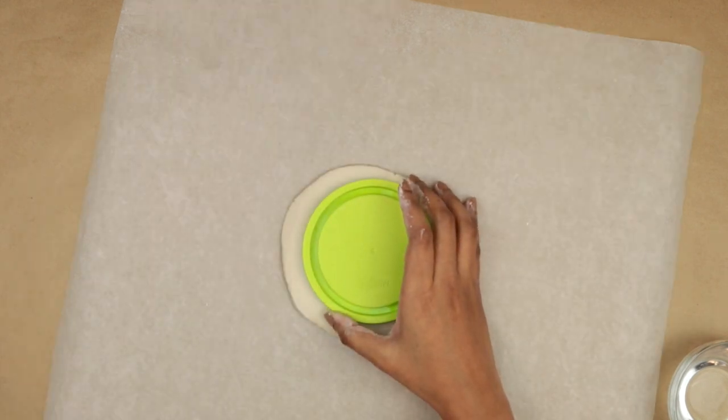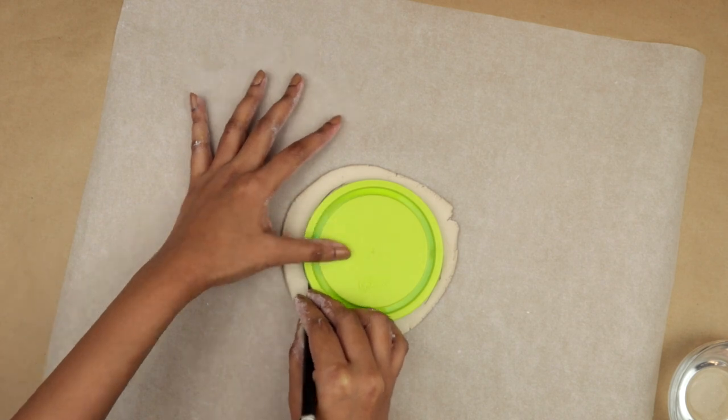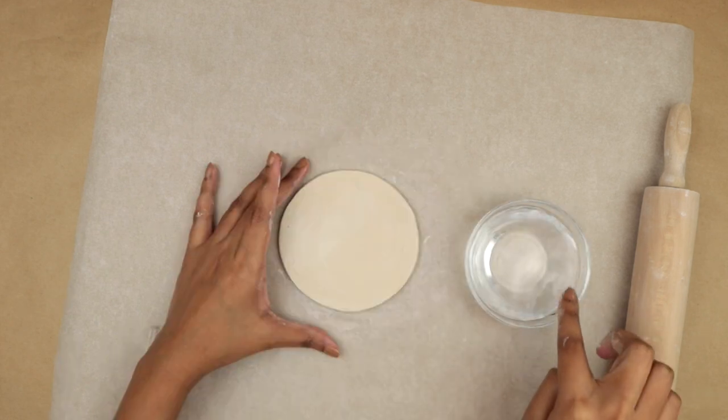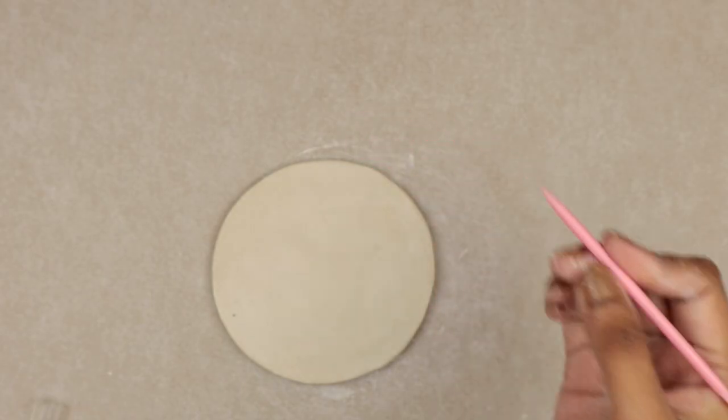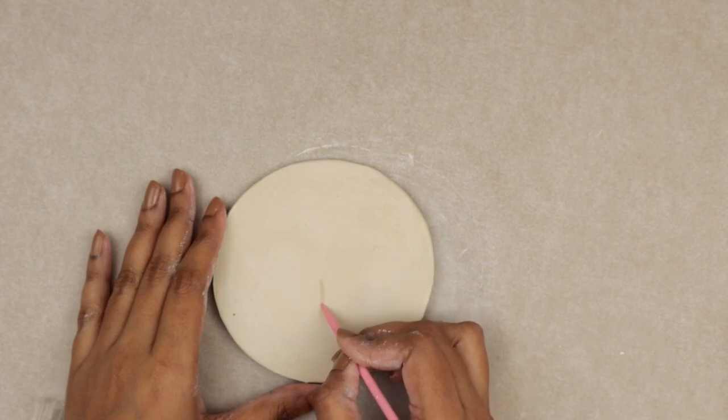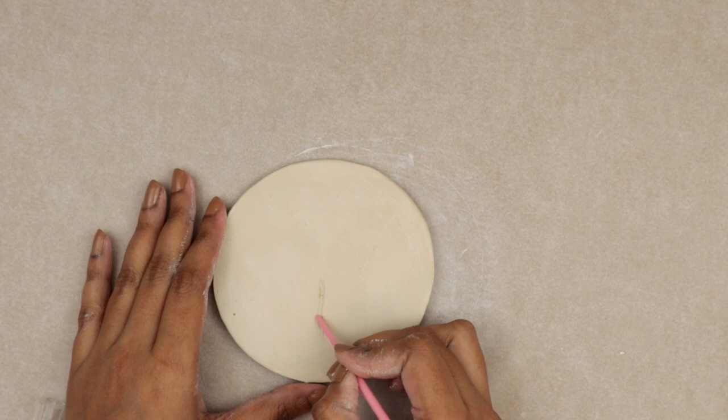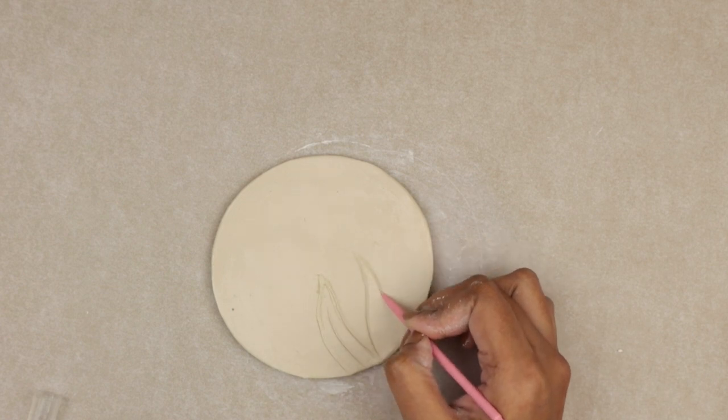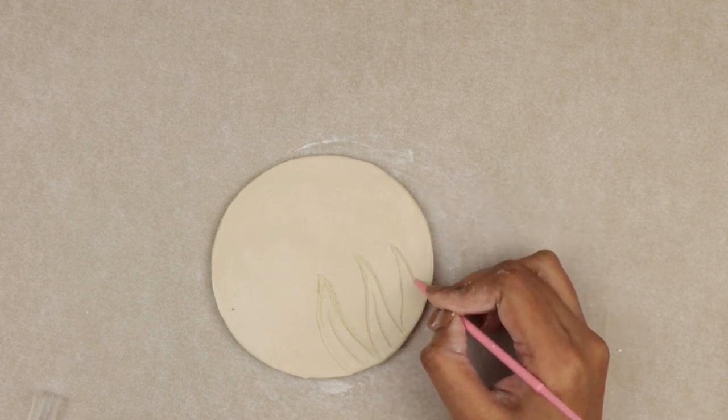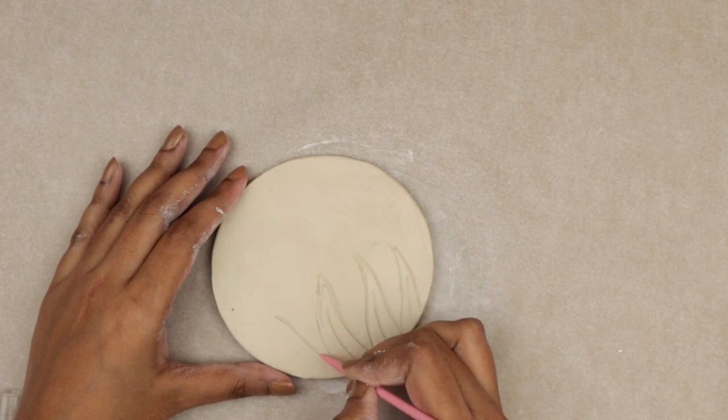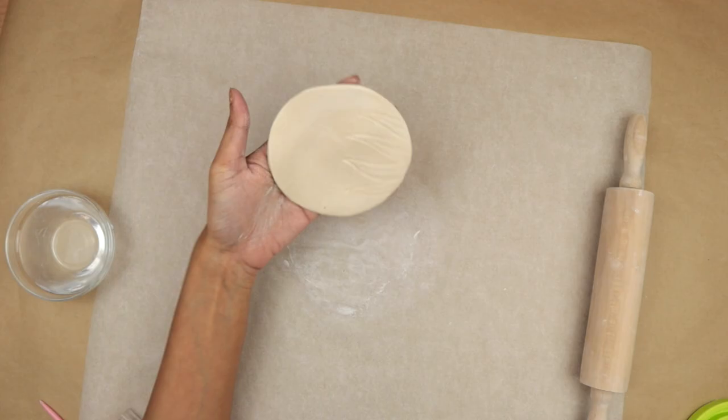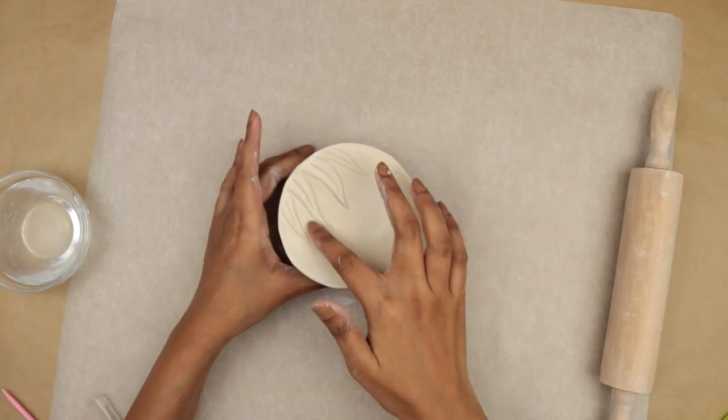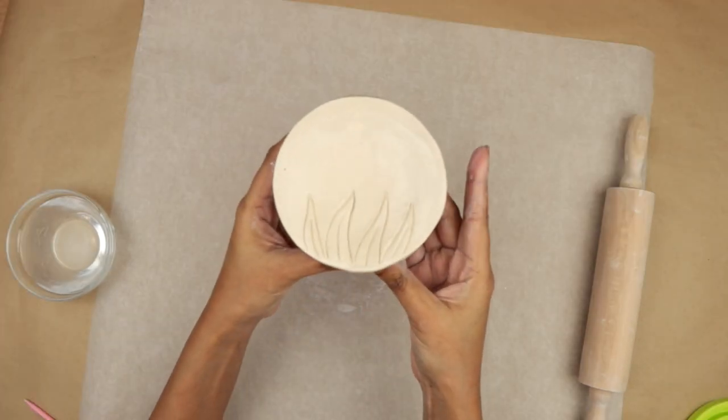I am using a container lid as a template to cut out a circle. Then I'm smoothing out the edges and the entire surface with the help of water. Now I'm taking my clay modeling tool and engraving the shape of some leaves. If you don't have a modeling tool, you can use anything like a bamboo skewer or a chopstick. To make the dish concave, I am placing it on a bowl and smoothing any imperfection. I'll be setting it aside to dry for 48 hours.